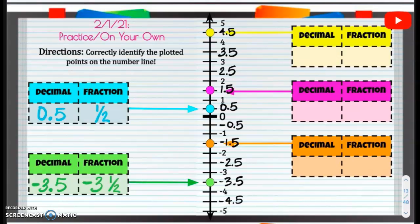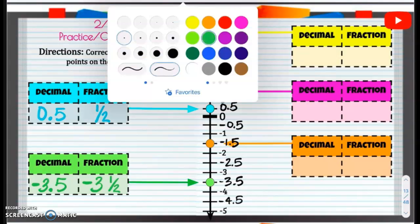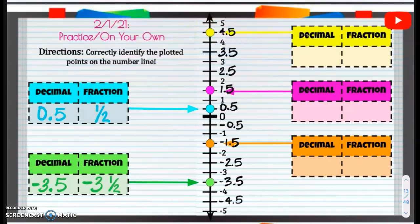All right, up top, the yellow. I am going to write this in black. All right, so we have that decimal of 4 and 1 half. It is positive. The fraction is going to be 4 and 1 half.